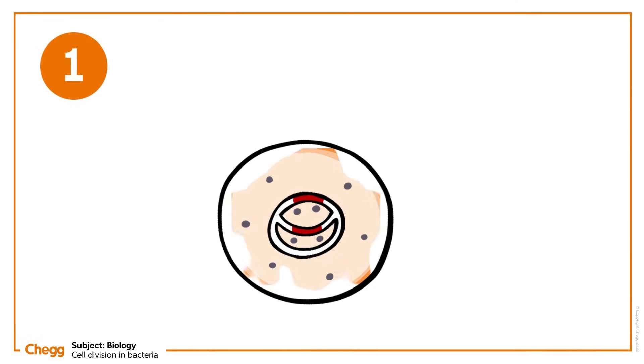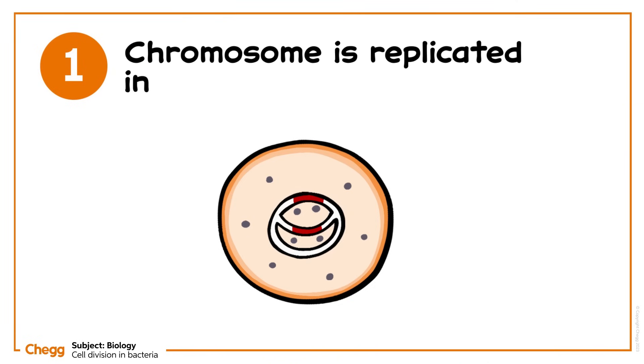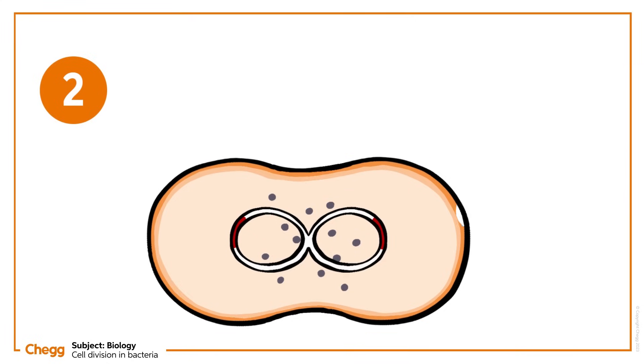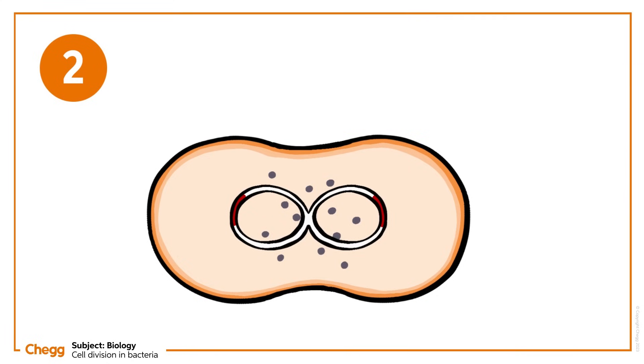Step 1. The chromosome is replicated in both directions, beginning at the origin of replication. Step 2. Copying continues as the cell elongates and proteins called FtsI move towards the centre of the cell.